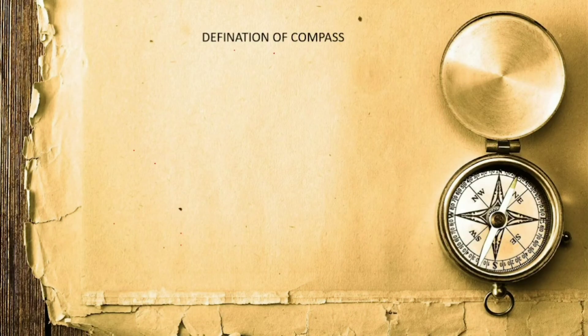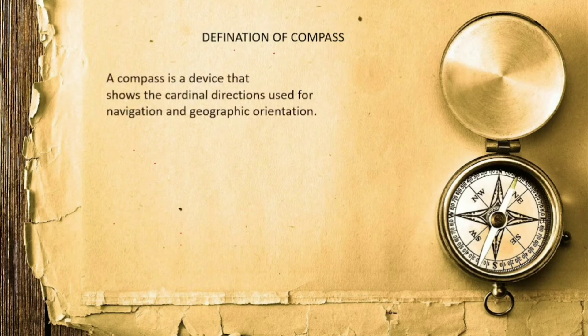First, the basic definition of compass. What is the compass? A compass is a device that shows the cardinal directions, used for navigation and geographic orientation. The cardinal directions are north, south, east, and west. These are the main cardinal directions of a compass.